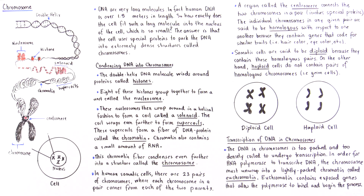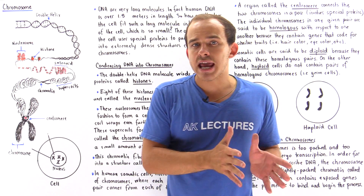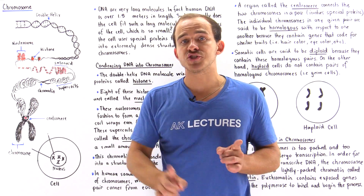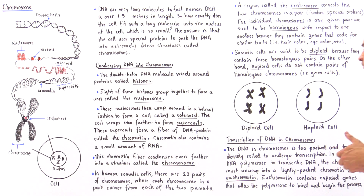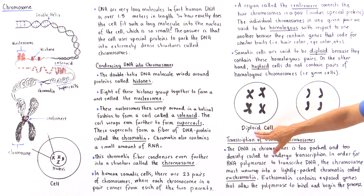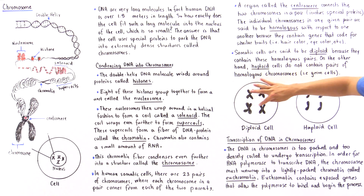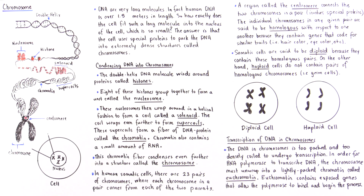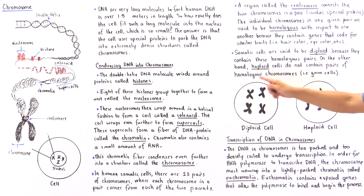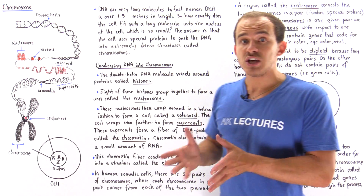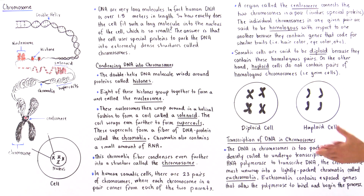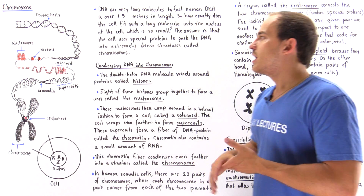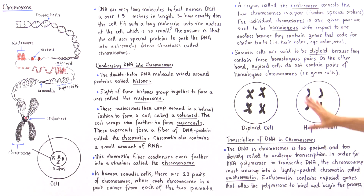A haploid cell is basically a cell that does not contain the homologous pairs — it only contains one of the chromosomes from each one of the homologous pairs. A diploid cell contains four homologous pairs of chromosomes, while the haploid contains four of the individual chromosomes, not the homologous pairs. One example of a haploid cell are germ cells, also known as gametes, which we'll examine when we discuss the process of meiosis.